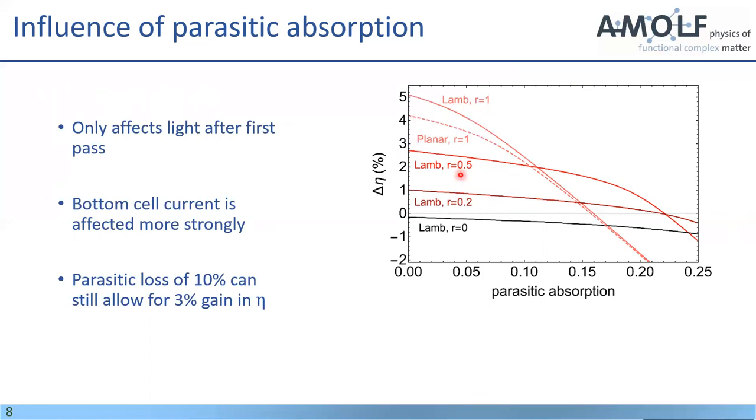Furthermore, if you look also at the numbers, you can see that even for a parasitic absorption of 10%, you can really gain up to 3% in efficiency according to detail balance, which is quite significant, considering that 10% parasitic absorption is a lot.